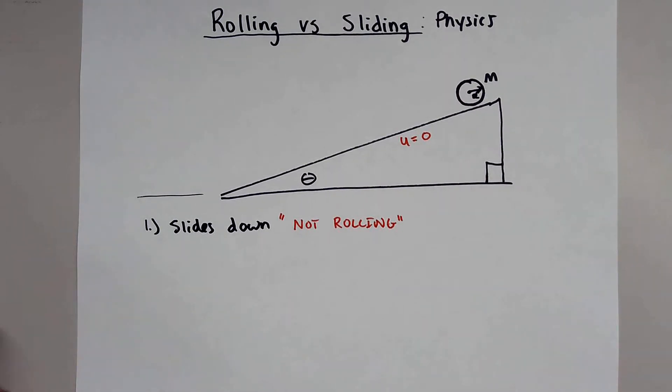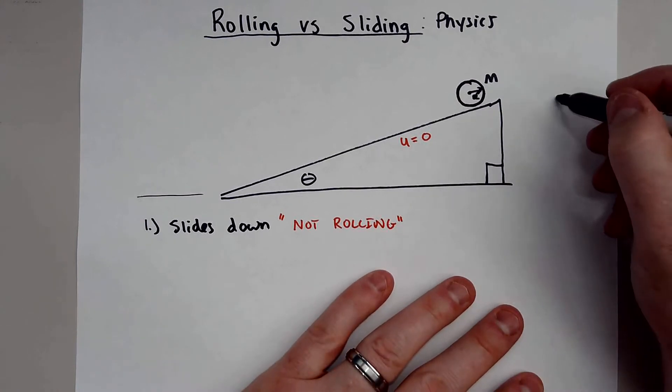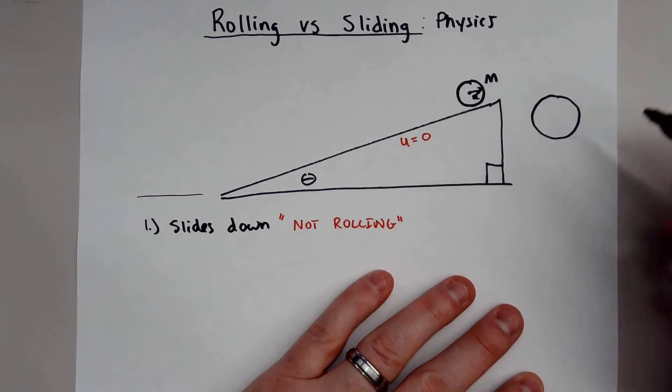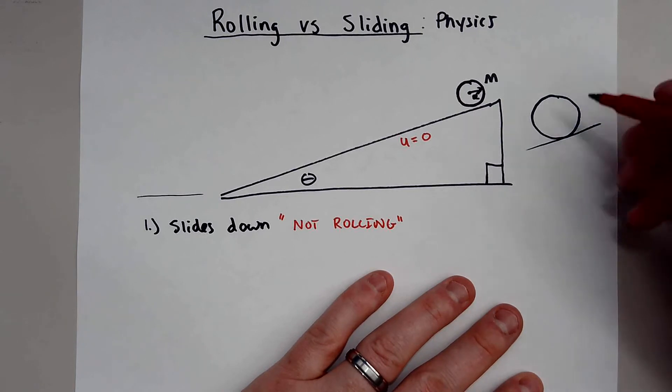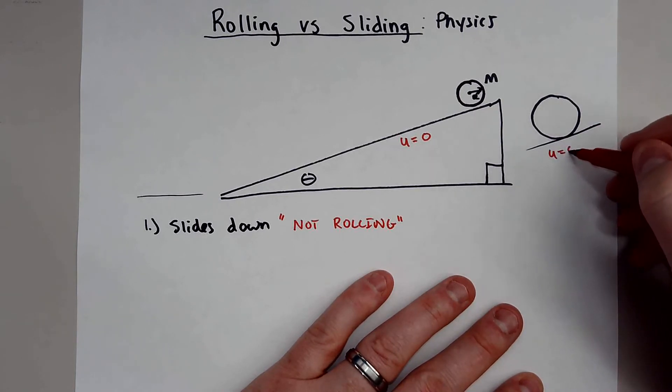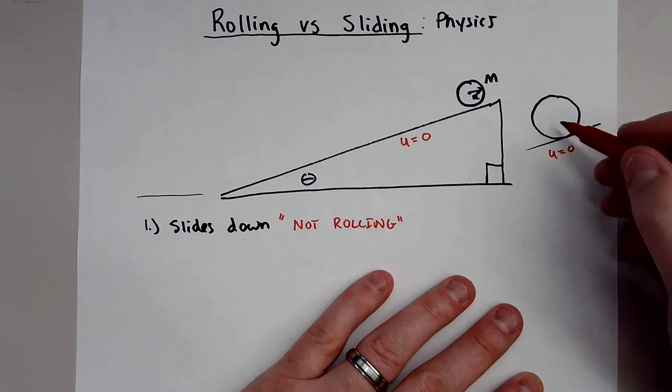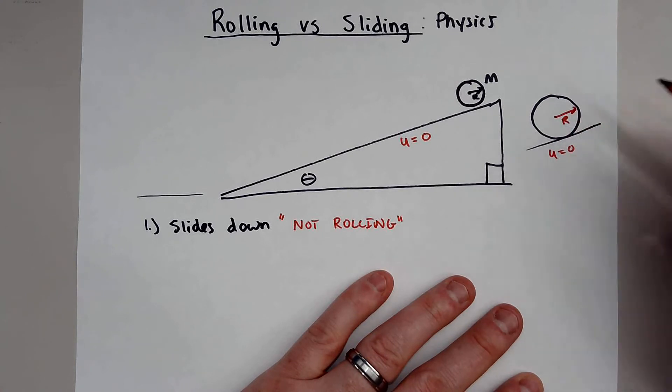And I want you to think about it like this. If there is no friction, an object that is just, let's say, not rolling, but if there is no friction and the object is just going down the ramp, remember, in order for the object to rotate, so this is radius R, in order for this object to rotate,